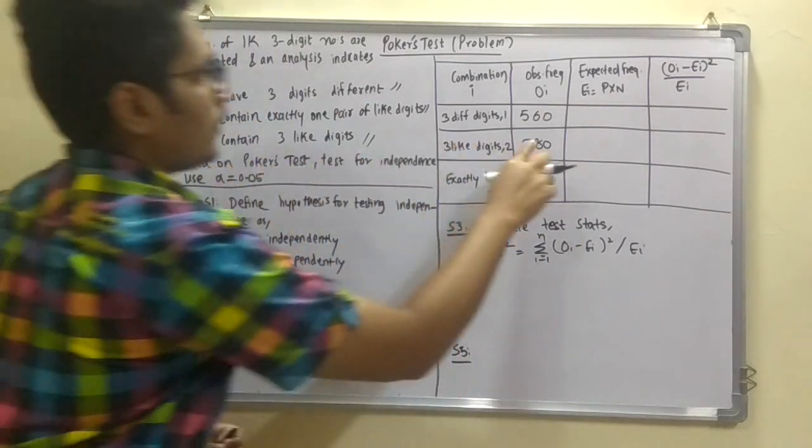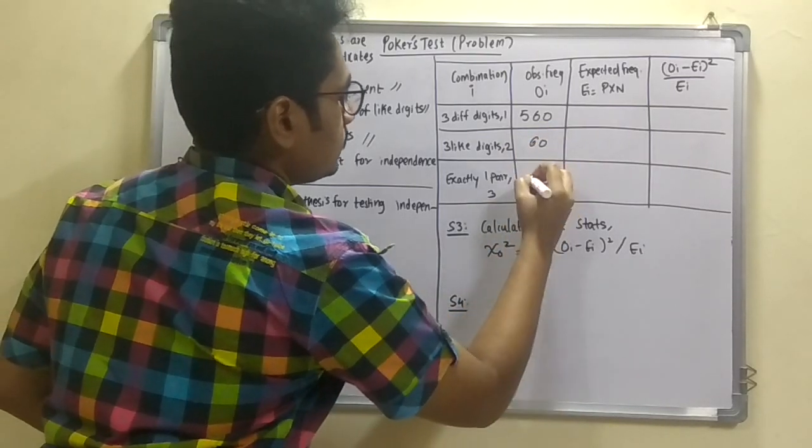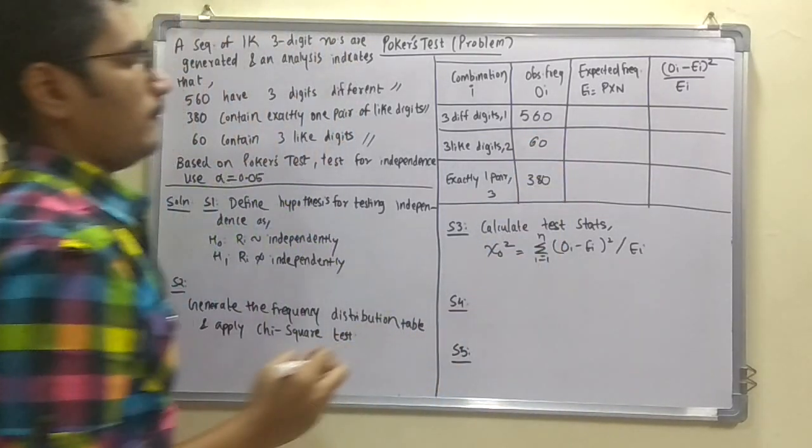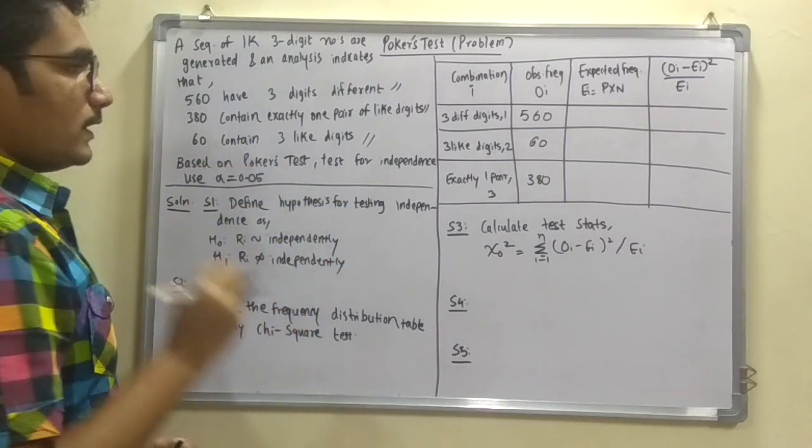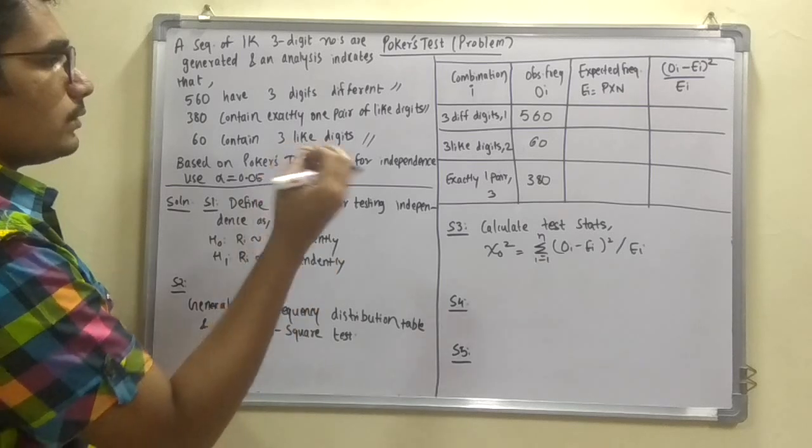So these are the fillings that we get from this. 3 like digits. Oh sorry. This was 60. And this is 380. Now we have to calculate the expected frequency. So expected frequency is calculated like P into N.